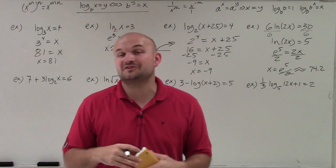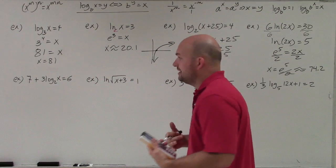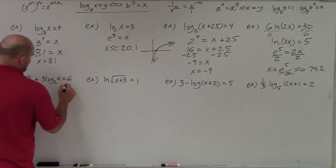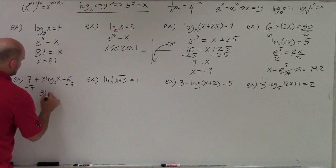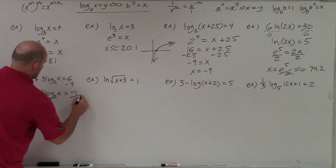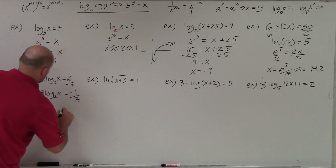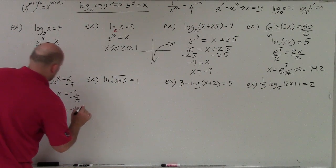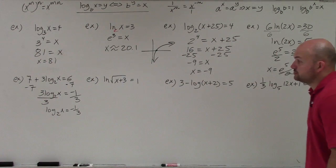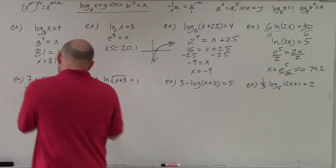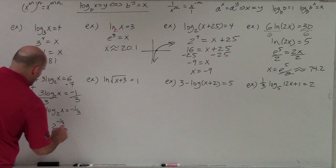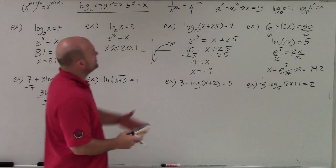In the next example, my logarithm is being added by 7 and multiplied by 3. When using inverse operations, always undo addition and subtraction first, then undo multiplication and division. After applying those steps, I get log base 2 of x equals negative one-third. Now my logarithm has been isolated.